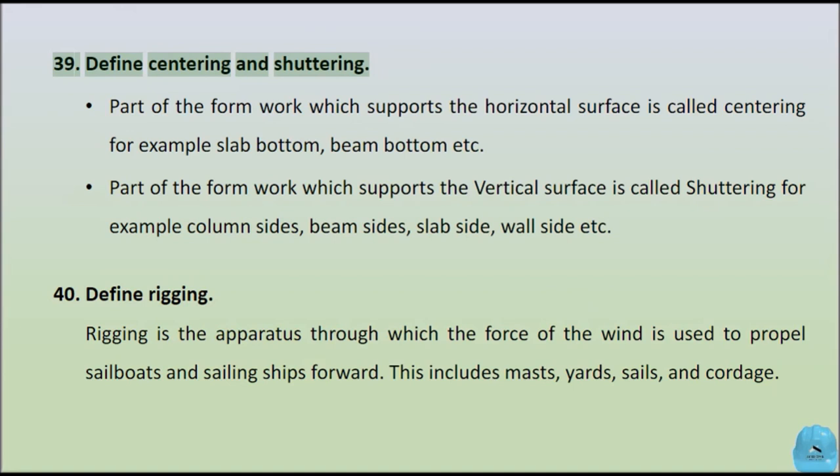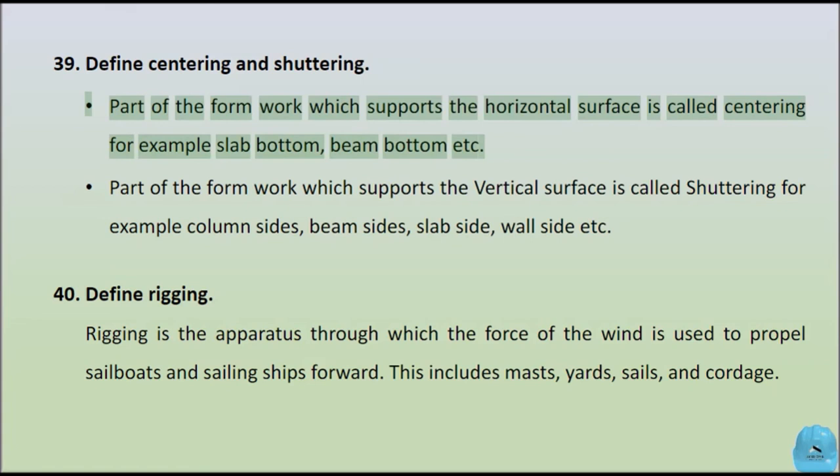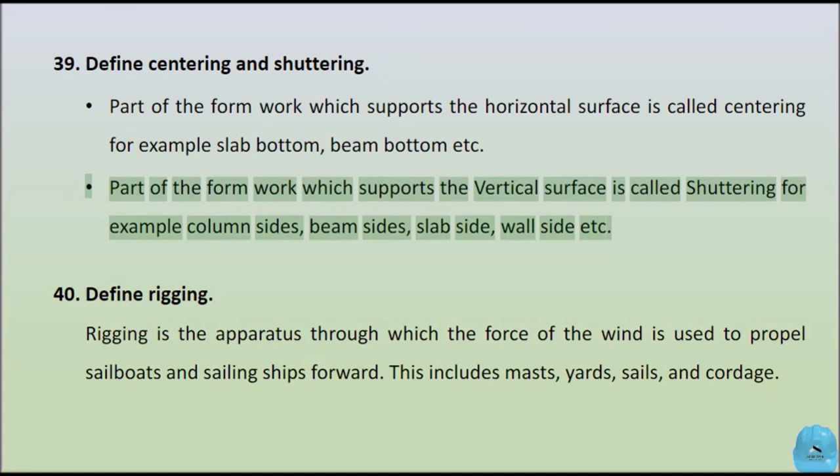Define centering and shuttering. The part of the formwork which supports the horizontal surface is called centering — for example, slab bottom, beam bottom, etc. The part of the formwork which supports the vertical surface is called shuttering — for example, column sides, beam sides, slab side, wall side, etc.